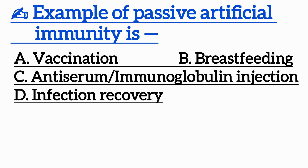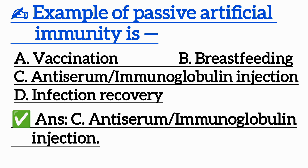Question 12: An example of passive artificial immunity is — Option A: Vaccination, Option B: Breastfeeding, Option C: Antiserum or immunoglobulin injection, Option D: Infection recovery. Correct answer is Option C: Antiserum or immunoglobulin injection.